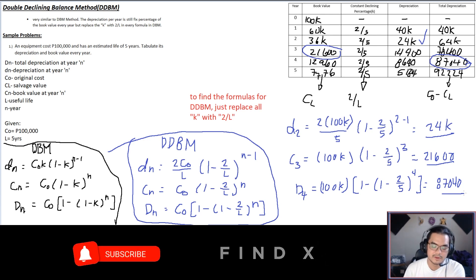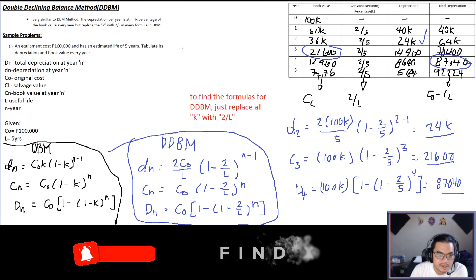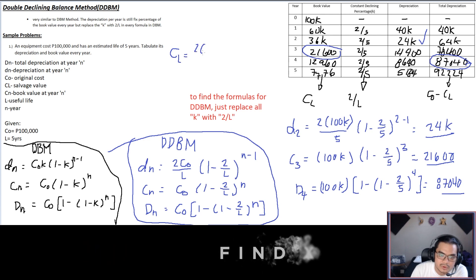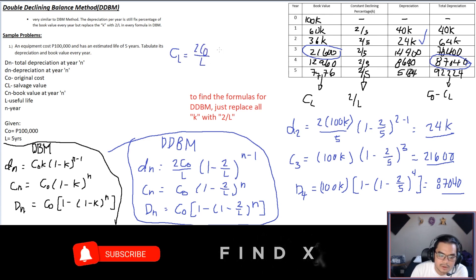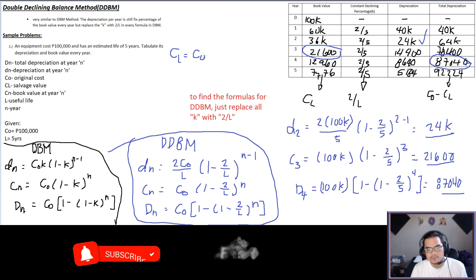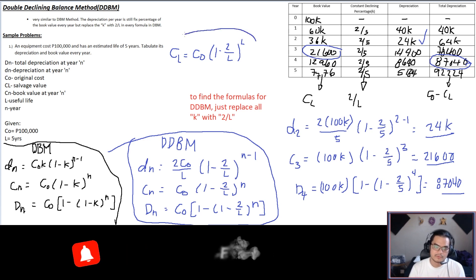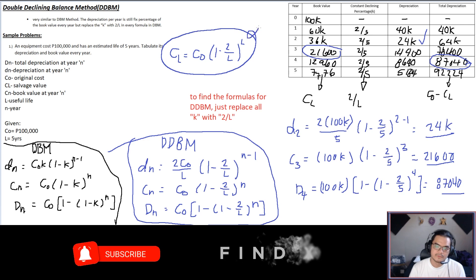Finally, if you want to find the salvage value using the Double Declining Balance method, we have a formula: CL = Co × (1 − 2/L)^L. That is the formula for the salvage value.